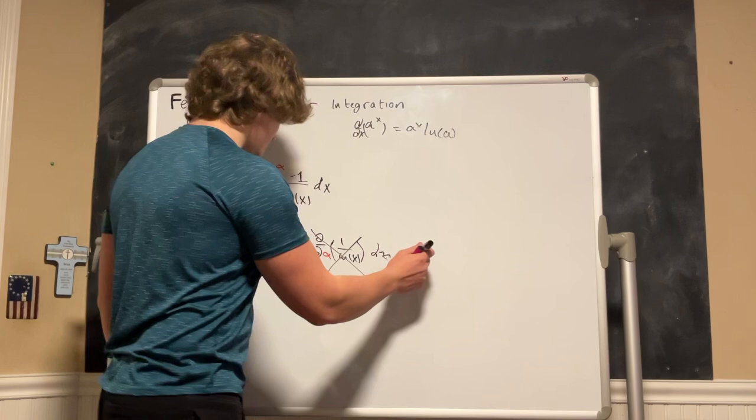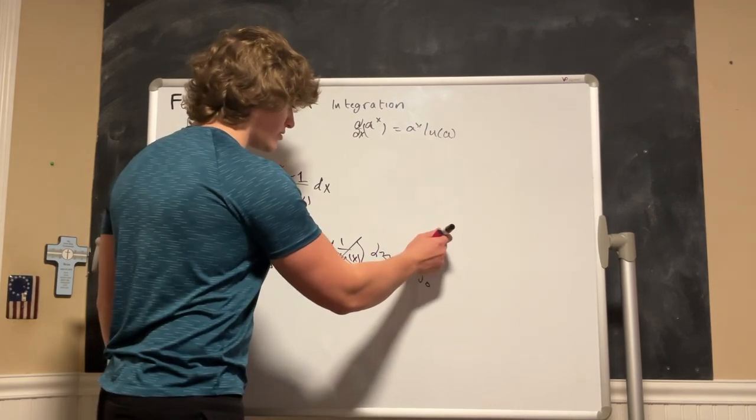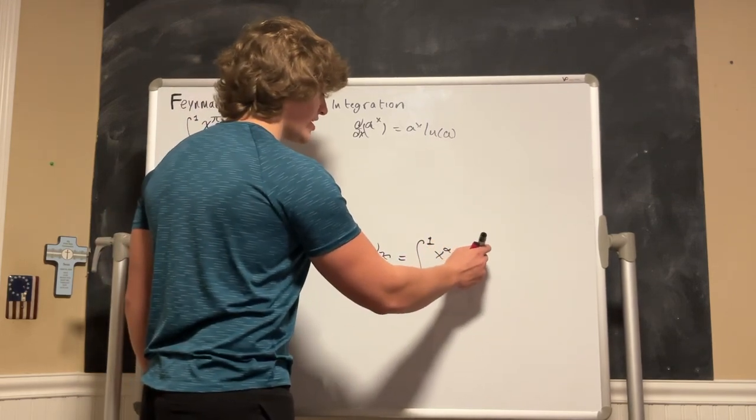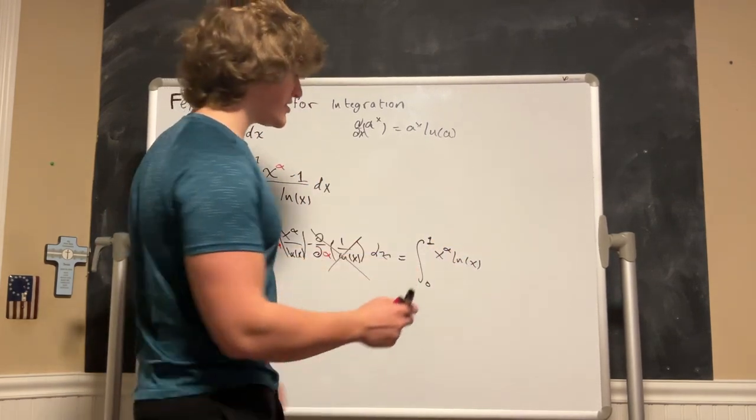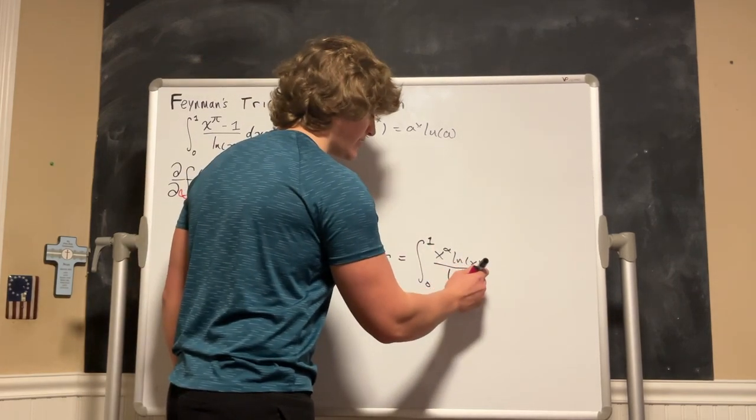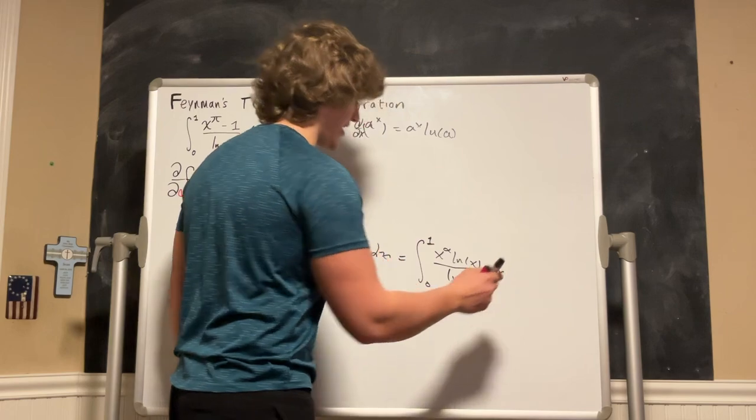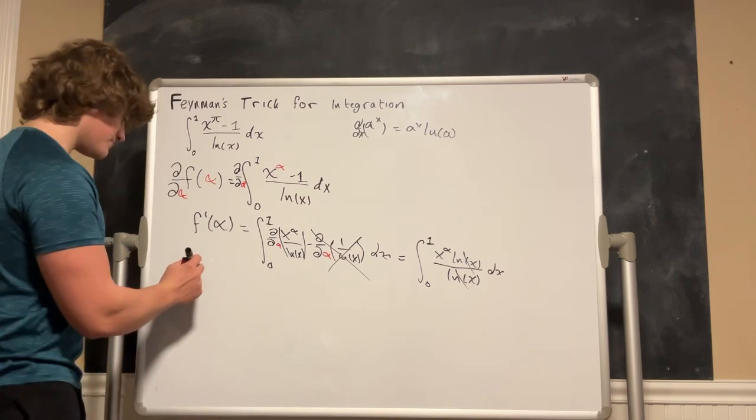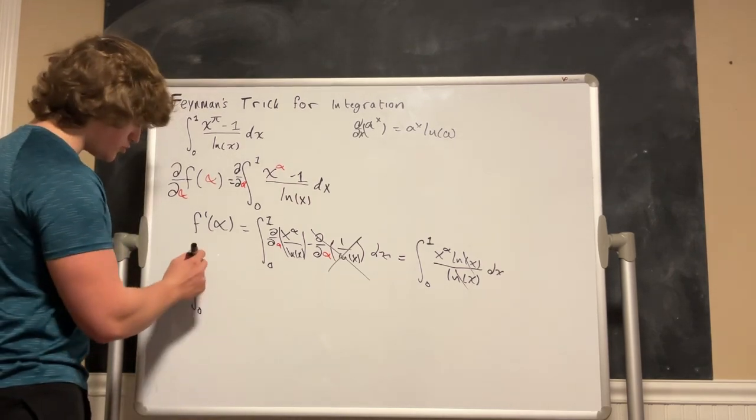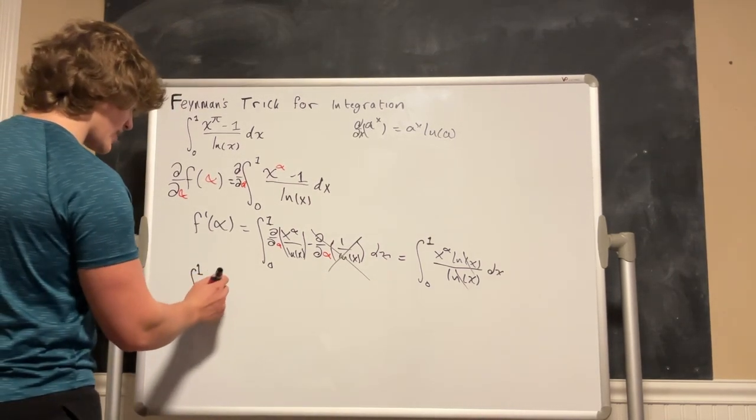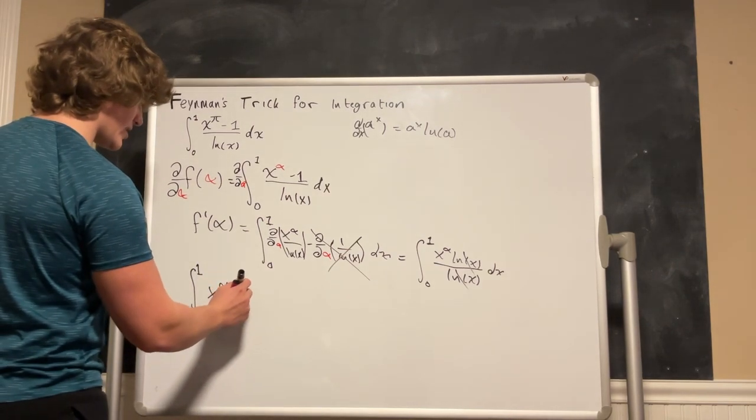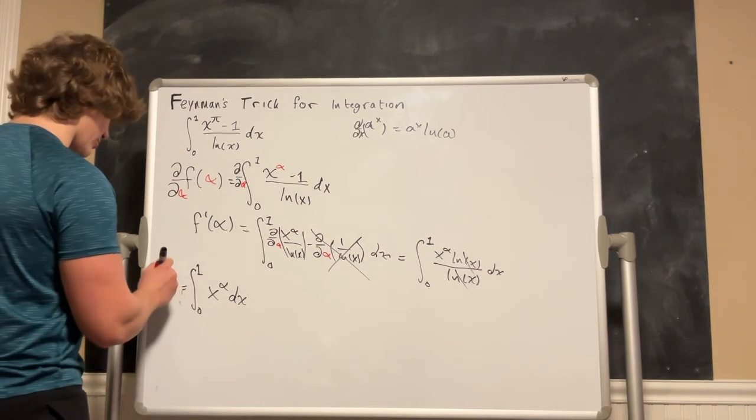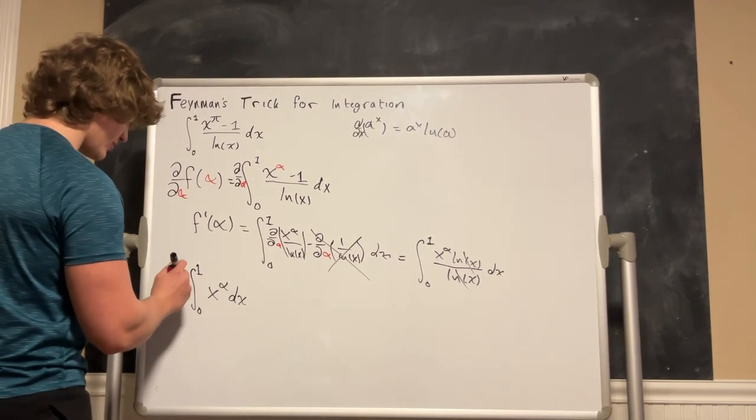So this becomes the integral from 0 to 1 of x to the alpha times the ln of x as that is how we differentiate this with respect to alpha divided by the ln of x, and this is with respect to x. Now these two ln's they just cancel out and we are left with the integral from 0 to 1 of x to the alpha with respect to x and that is equal to our f prime of alpha.